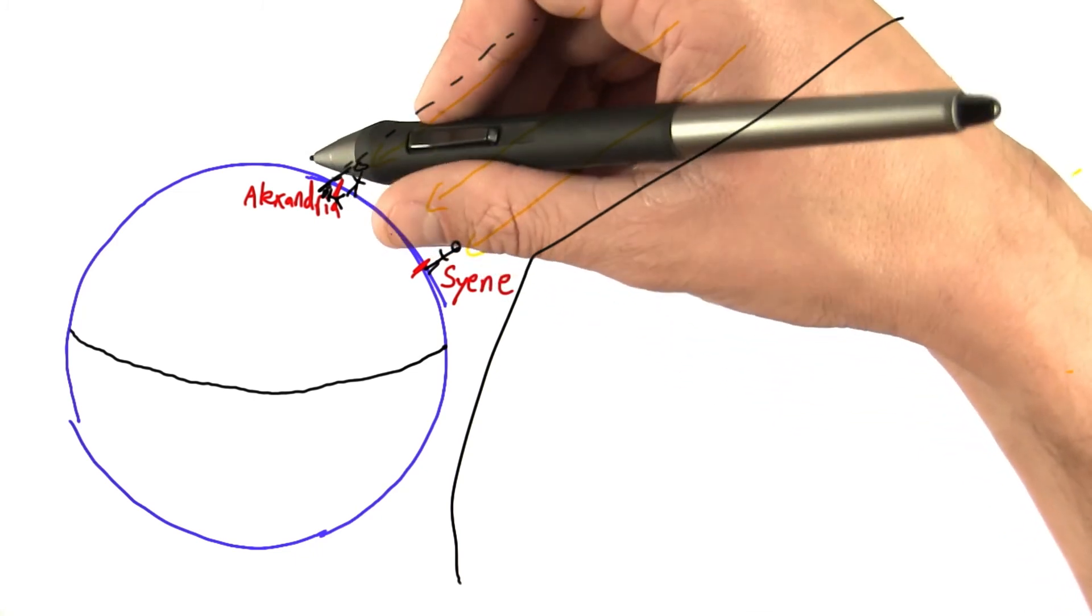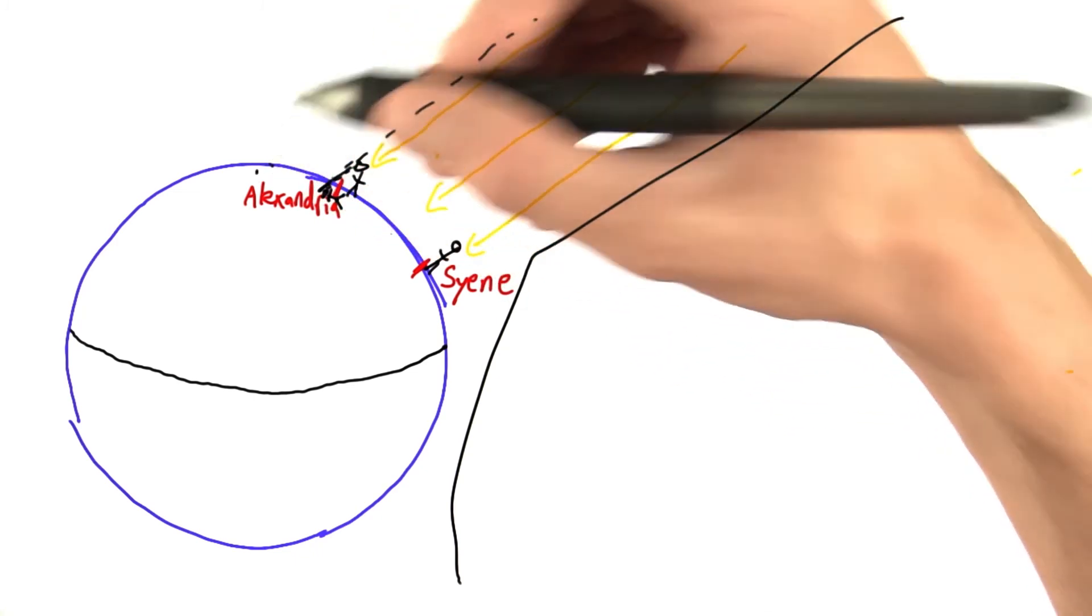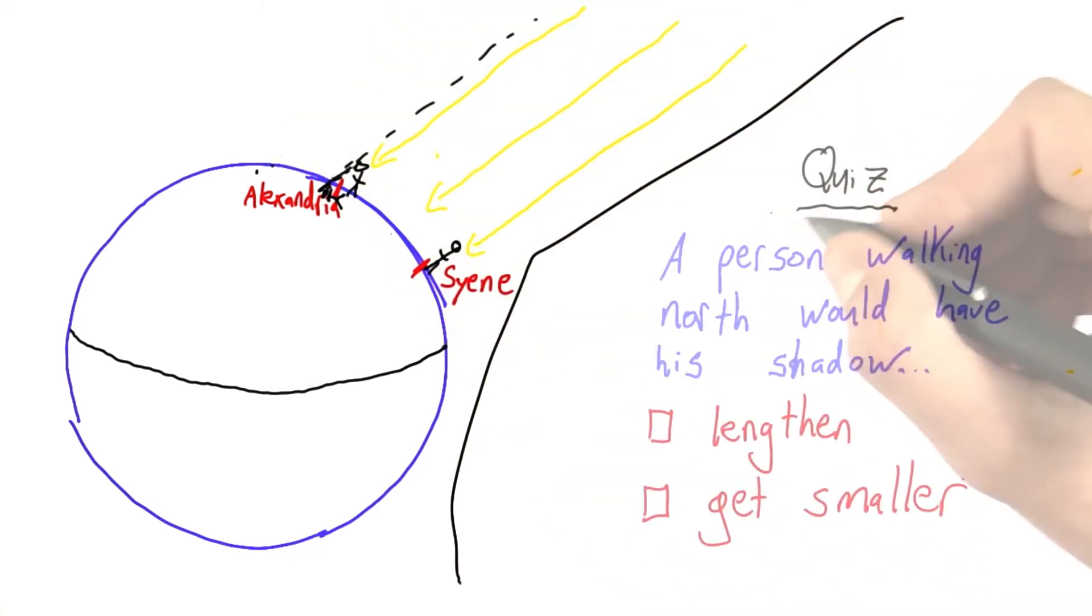If this person started walking north, closer to the pole up here, what would happen to a shadow? Would his shadow lengthen as he walked north or would it get smaller?